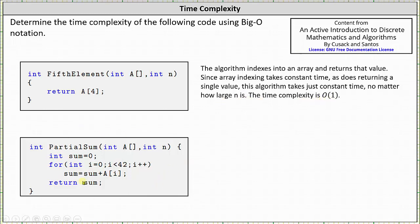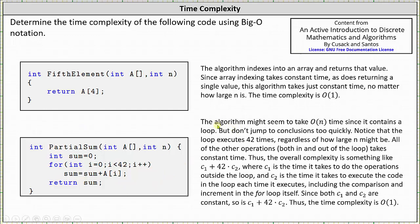Analyzing the code of the second example, we need to be careful. The algorithm might seem to take big O of n time since it contains a loop, but don't jump to conclusions too quickly. Notice that the loop executes 42 times, regardless of how large n might be. Here we have i equals zero, and then i less than 42.